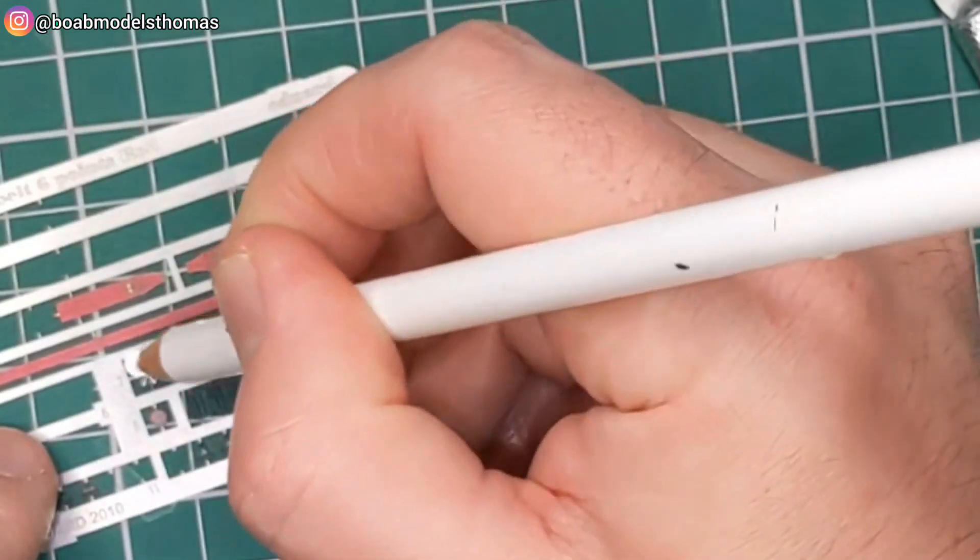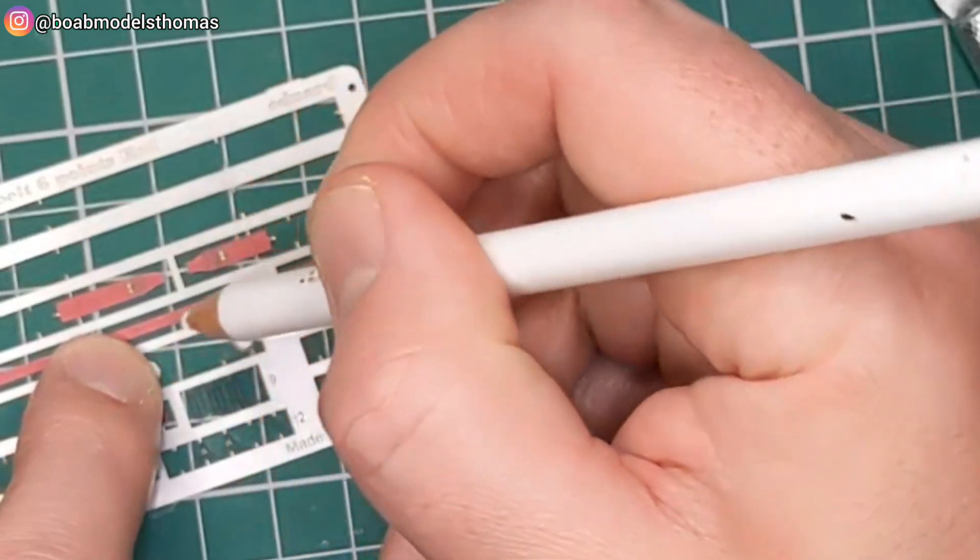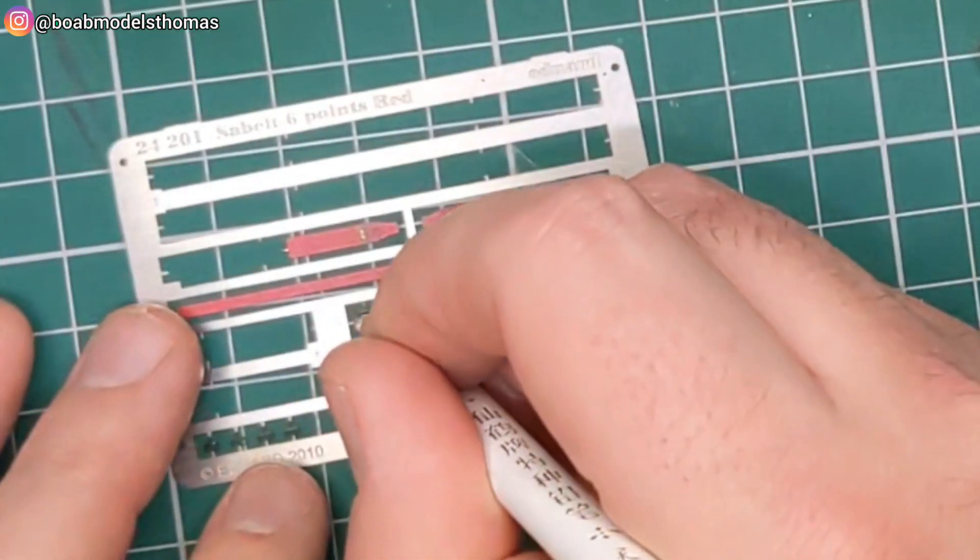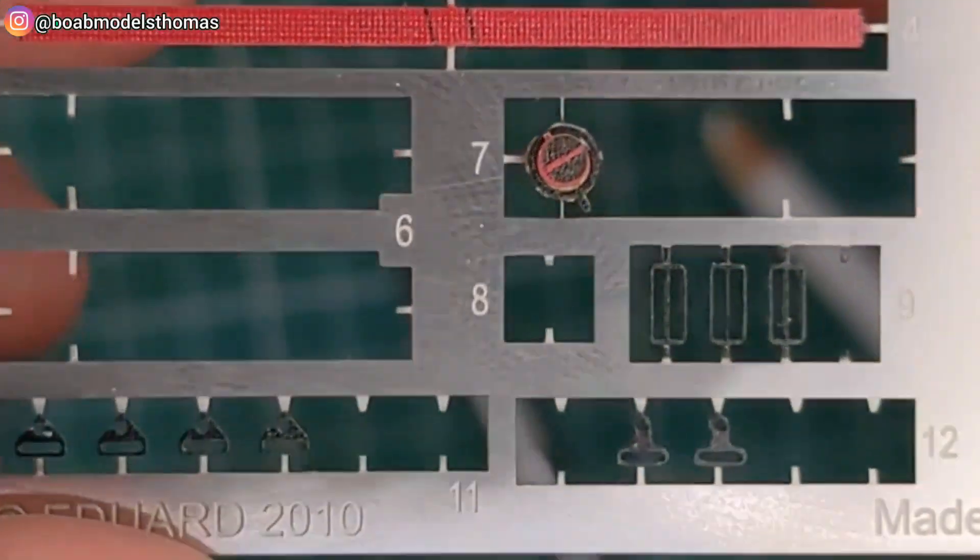The wax pencil here is very useful for picking up photo etched parts. You can pick those up on websites like eBay very easily. They're meant for jewellers. And then you've got the top section there which has got the release catch which again has been painted. Looks very nice.